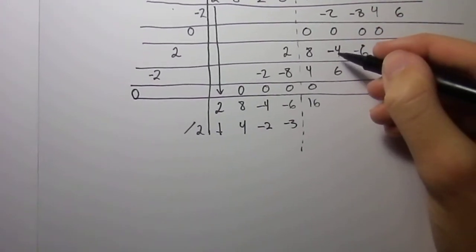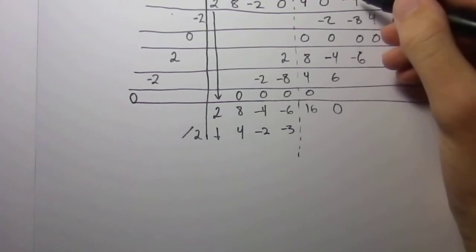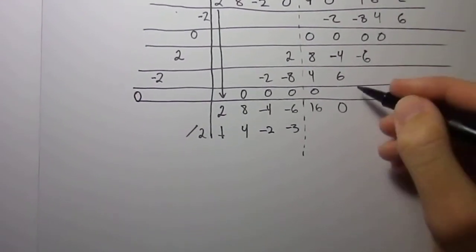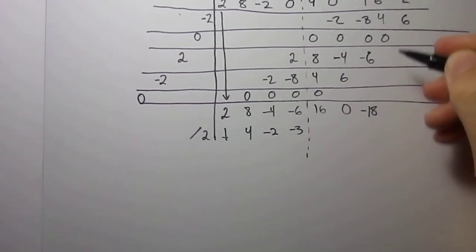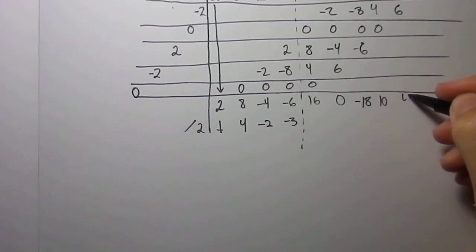Negative 2 plus negative 4 plus 6 should be 0. Perfect. Negative 4 plus negative 8 plus negative 6 is negative 18. 6 plus 4 is 10. And negative 2 plus 6 is 4.